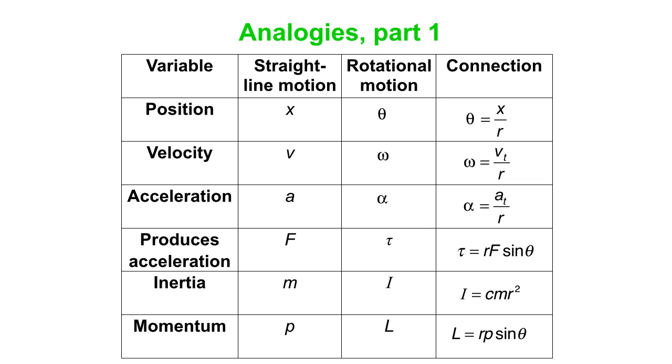Okay. What produces acceleration for straight line motion? It's force. And the measure of something's sort of tendency to obey Newton's first law, to stay at rest if it's already at rest, is the mass. And then we have something called momentum.